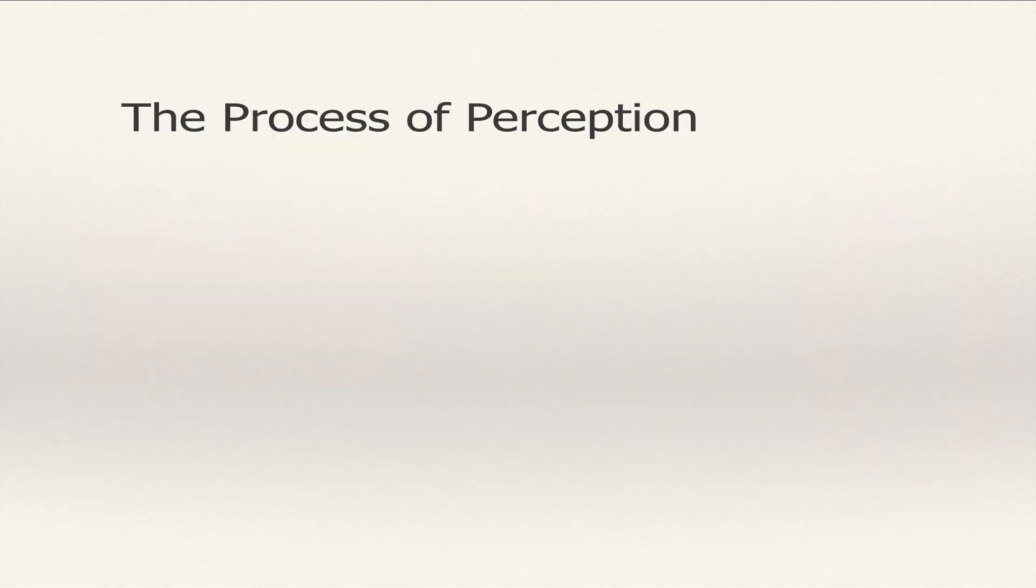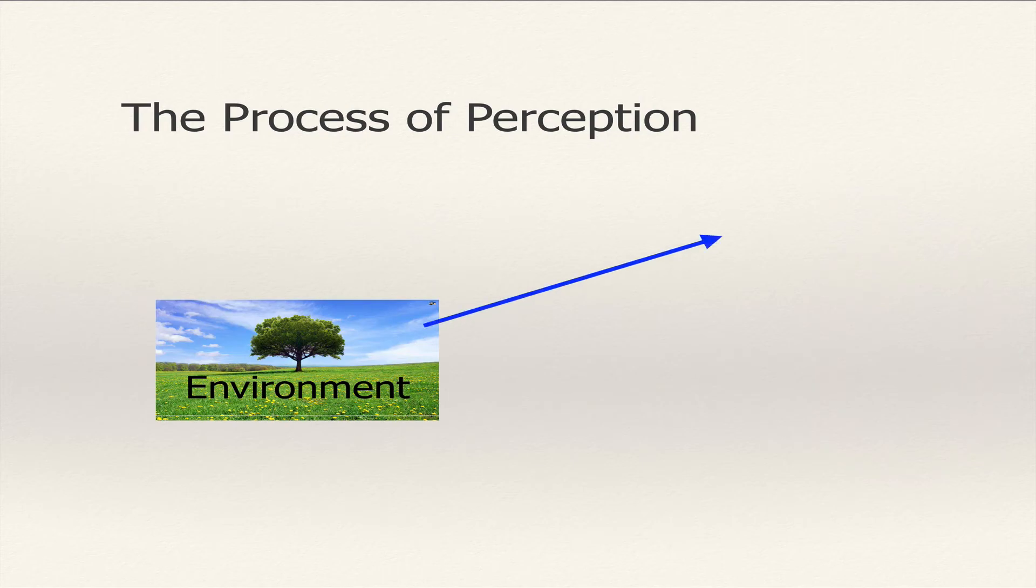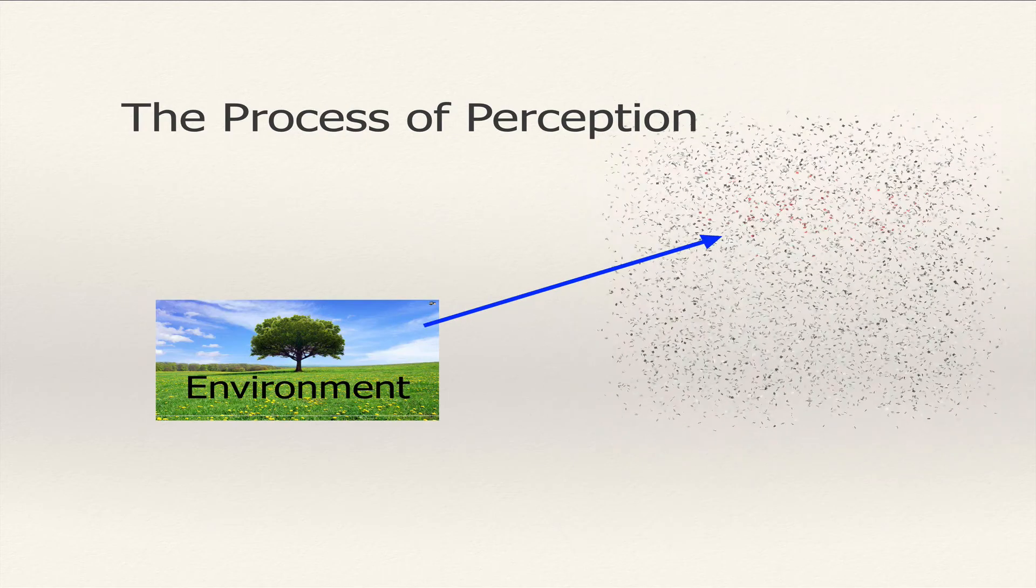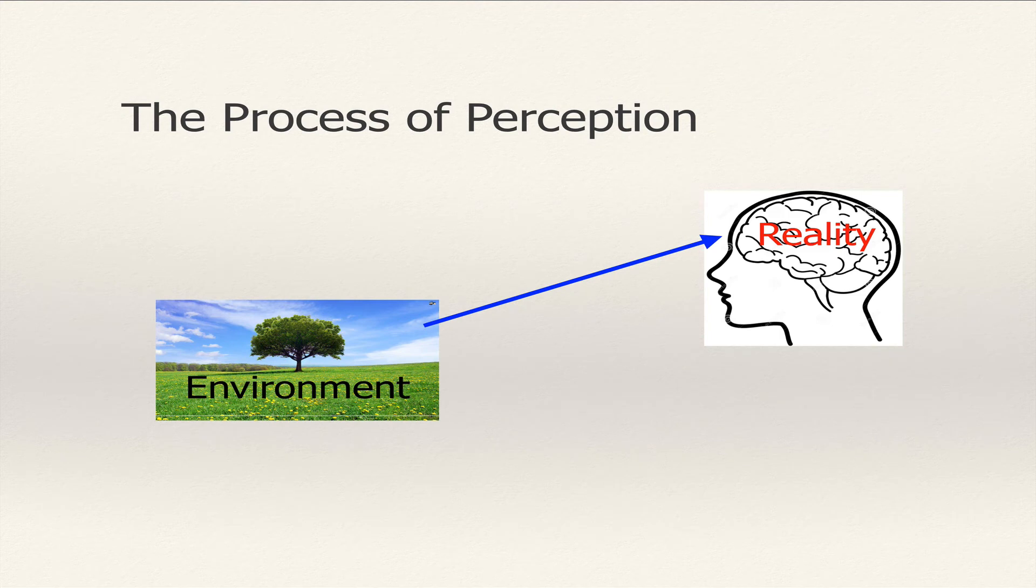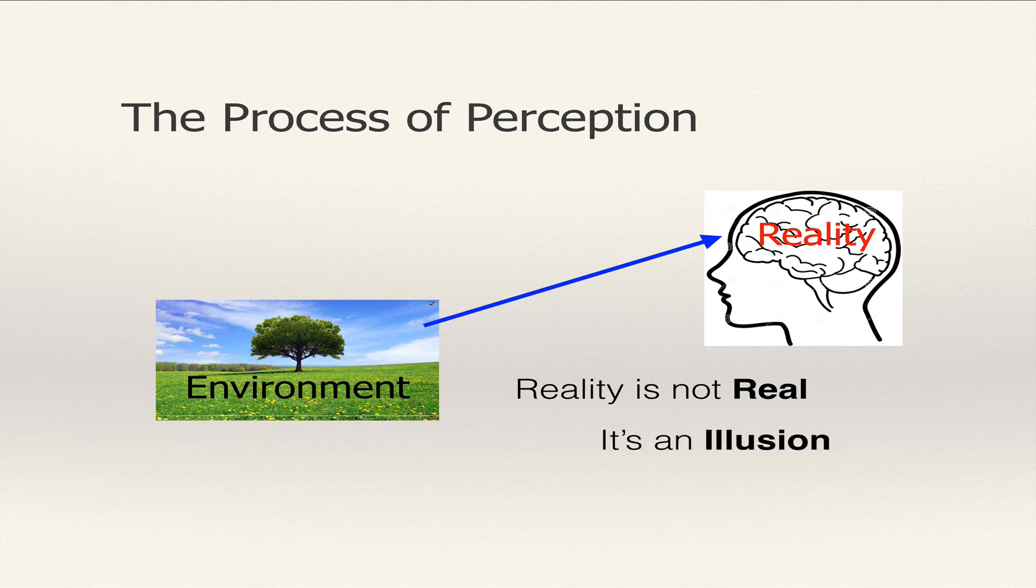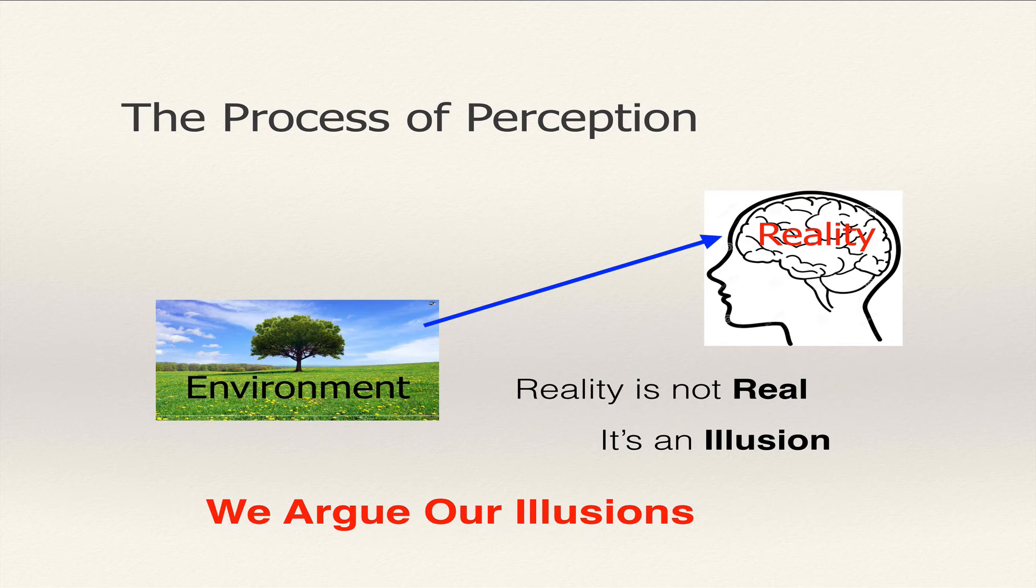So remember, the process of perception starts with the environment and moves over to a reality. And a couple of things to remember. Your reality is not real. Your reality is an illusion. Reality is not real. It's an illusion. It's this illusion that we've created in our head of that environment. We argue our illusions. We don't argue the environment. We argue our illusions. In other words, if we're arguing over President Obama, we're not arguing over him. We're arguing our realities of President Obama.